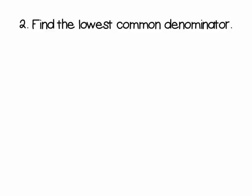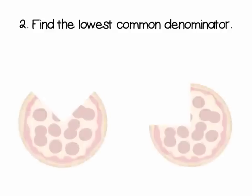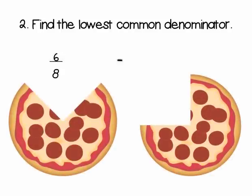Since our fractions have unlike denominators, we need to find the lowest common denominator. In this case, since we have 6 eighths minus 3 fourths, we know that 4 goes into 8 two times.